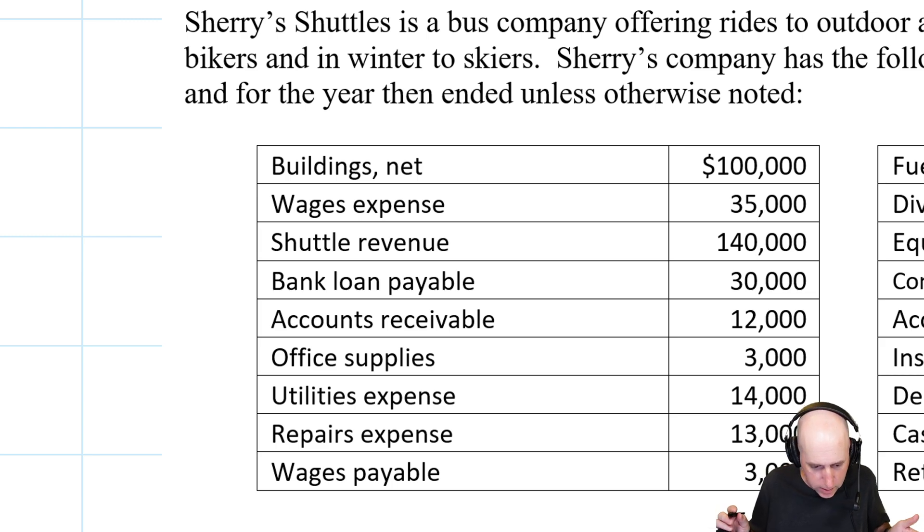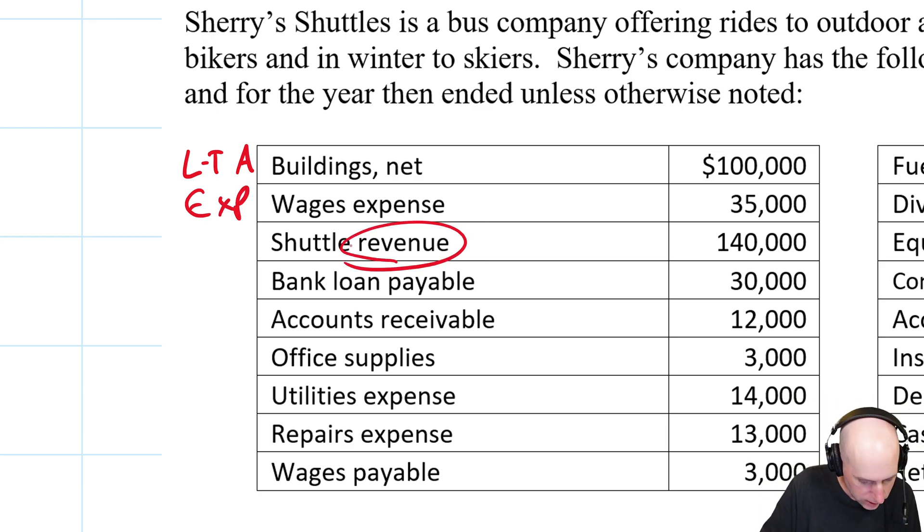So let's start with buildings. What is a building? Well, I hope that you're shouting at your screen, a building's an asset. Now, if it's an asset or liability, let's go a step further like we did in problem 1-2. Is it current or long-term? And the answer is a building, it's going to last 30 years. It's a long-term asset, right? A year is sort of our cutoff between current and long-term. It is a long-term asset. What about wages expense? Well, I hope, again, you're shouting at your computer, it says expense for goodness sake. It's an expense. Yes, it's an expense. No tricks there. Shuttle revenue. Well, I would suggest that is a revenue account.